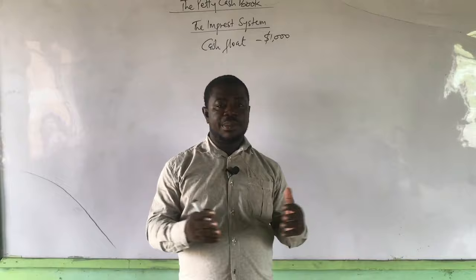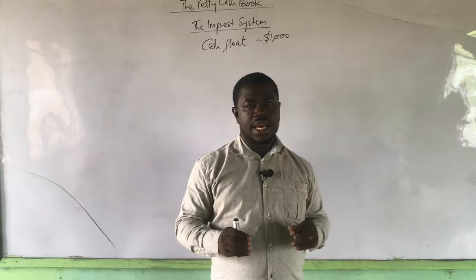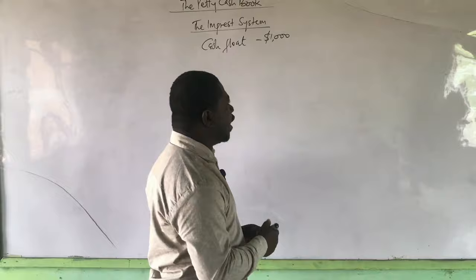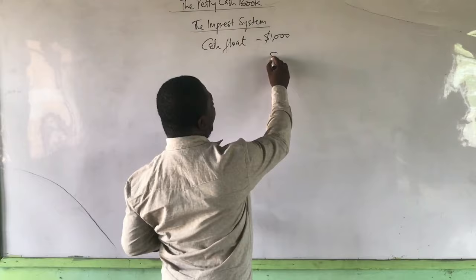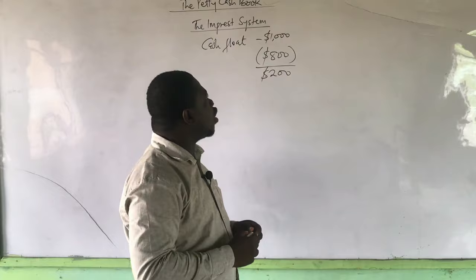Let's say you are given a cash float of $1,000. The purpose of this $1,000 given to the petty cashier is to cater for petty cash expenses. They estimate that maybe within a month you are going to buy a pen, a sachet of water, a bottle of water for the officers — buying petty things out of this $1,000. At the end of the period you account for this $1,000. Let's say you spent $800, meaning you are left with $200 in hand.